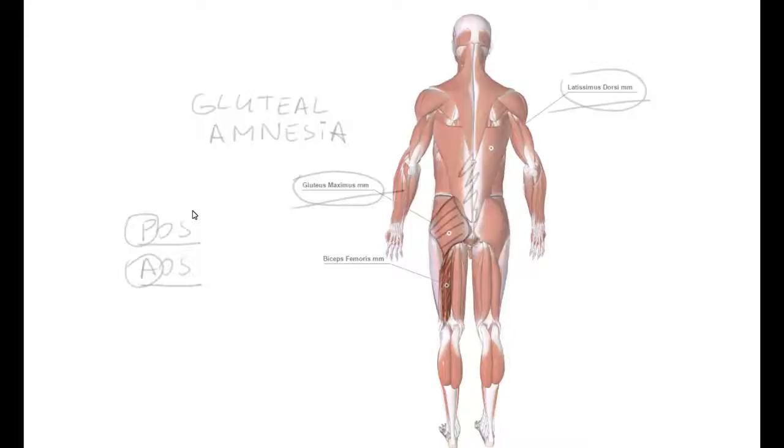What I was trying to say was that if posterior oblique system is underperforming for some reason, the deep longitudinal line will compensate for that. Deep longitudinal line consists of biceps femoris and erector spinae muscle group on the same side, as well as gluteus maximus and latissimus dorsi on opposing side, and sacrotuberous ligament lying just underneath gluteus maximus muscle.